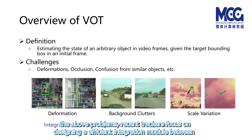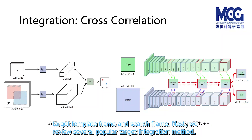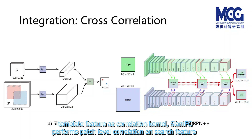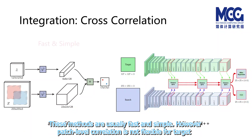To solve the above problems, recent trackers focus on designing an efficient integration module between the target template frame and search frame. We review several popular target integration methods. Cross-correlation is a classic integration method introduced by SiamFC. Using the template feature as a correlation kernel, it performs patch-level correlation on the search feature to predict the confidence map. SiamRPN++ employed a deeper network and depthwise correlation. These methods are usually fast and simple.